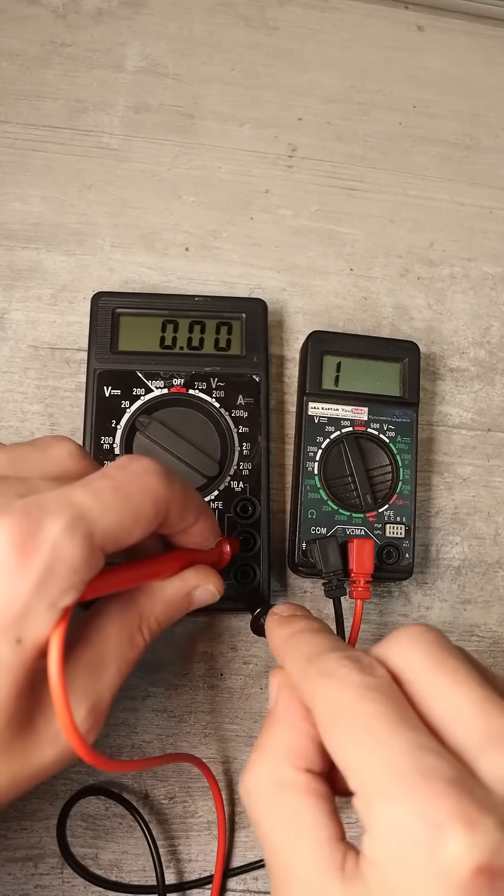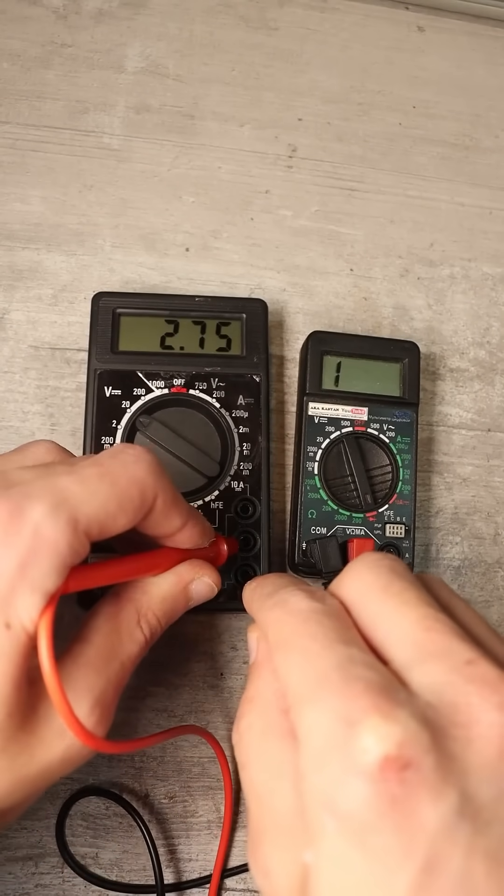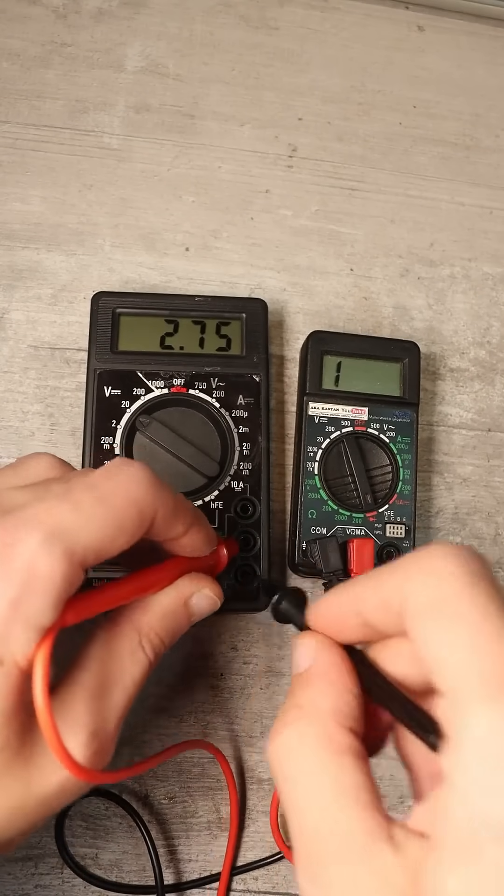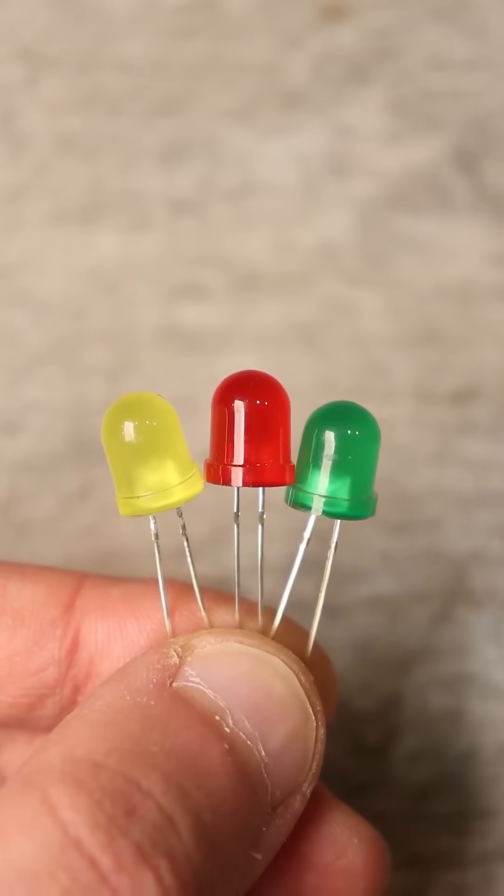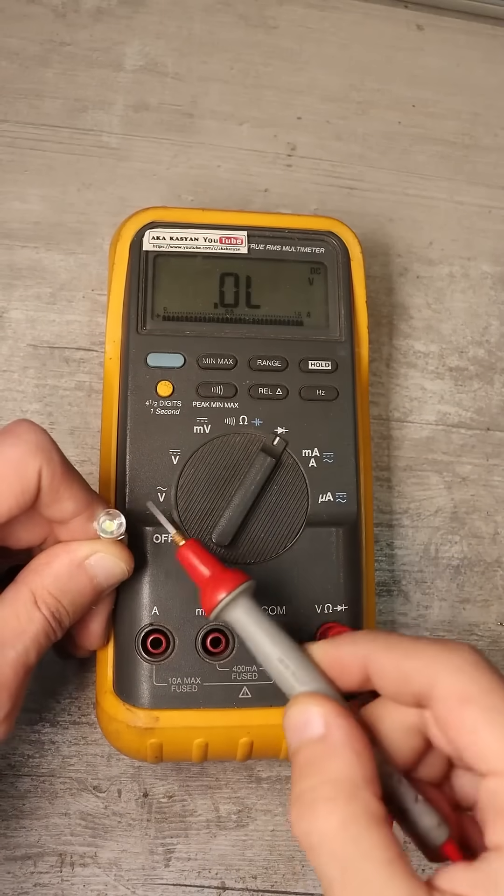In this mode, the multimeter probes generate a voltage of about 3 volts, give or take depending on the device. Yellow, green, and red LEDs have a low forward voltage, whereas blue and white ones have a fairly high voltage, over a volt.